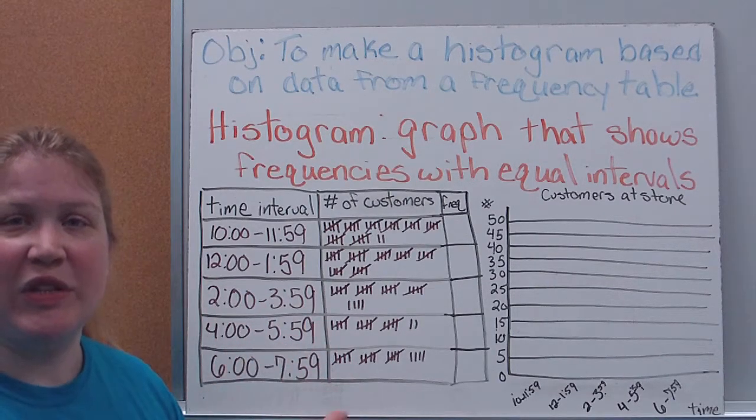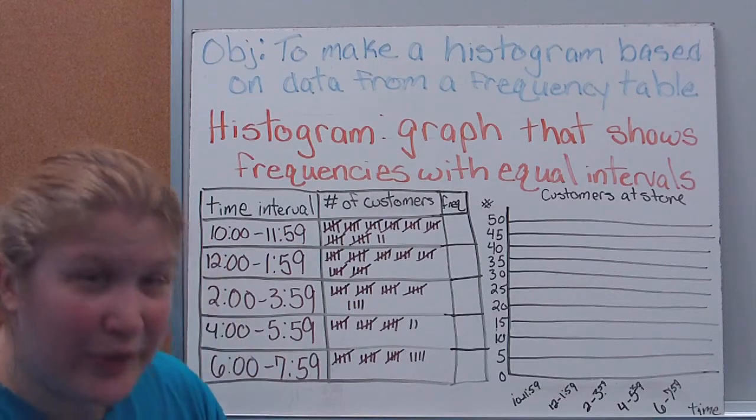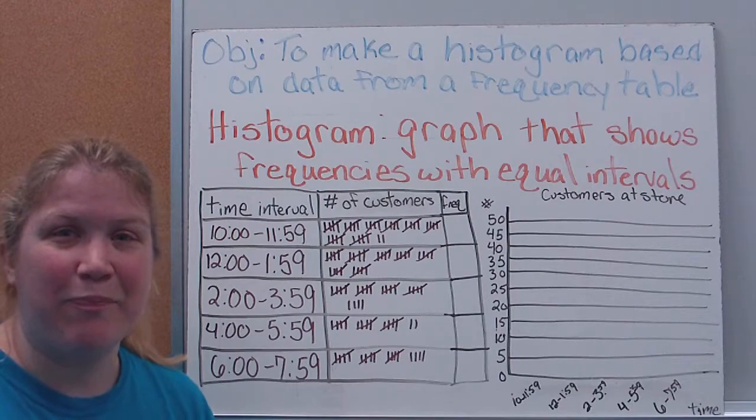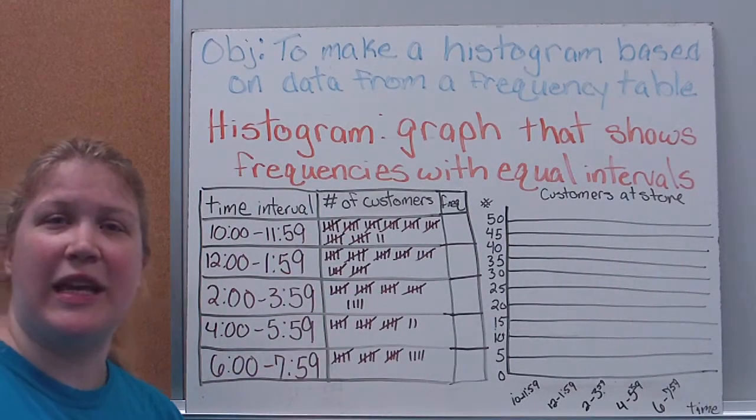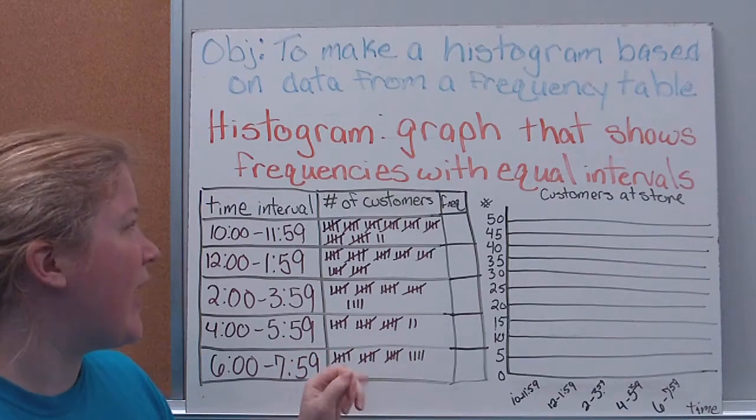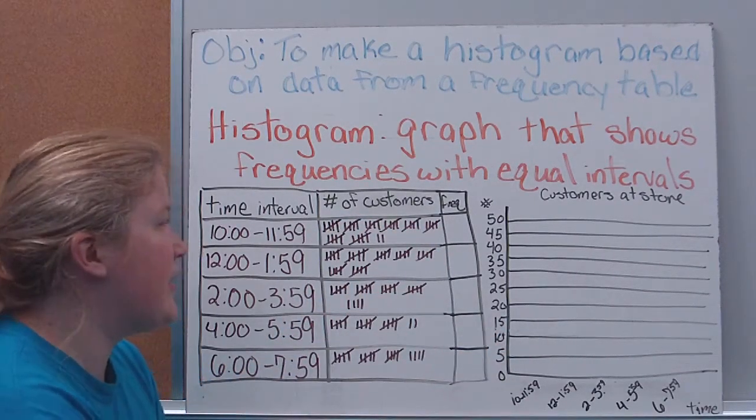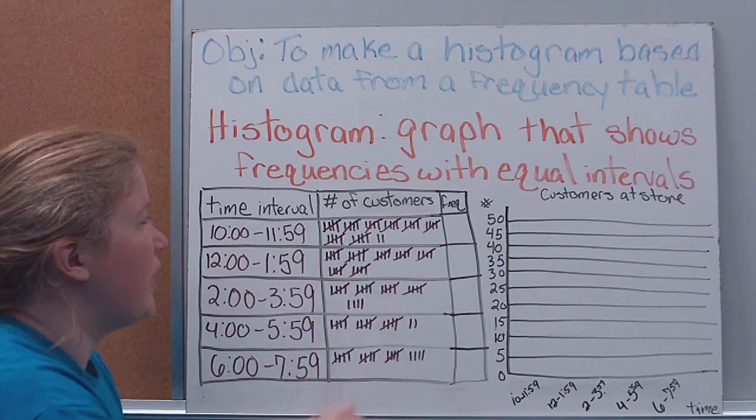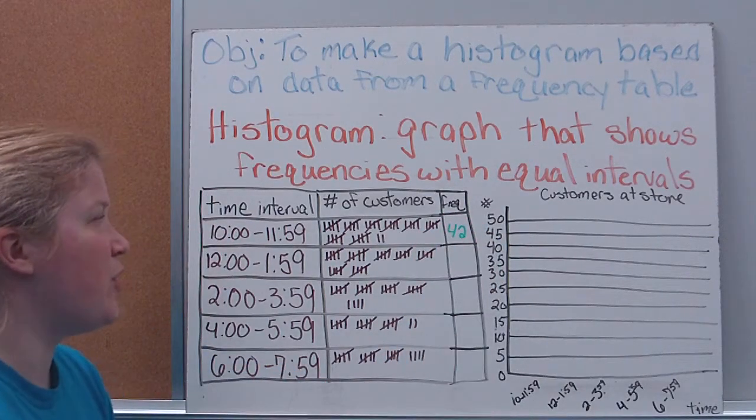This is a graph for the number of customers who came into a store during certain hours. So what we're going to do is we're just going to finish up our frequency table and then we're going to make it into a histogram. So the first thing you'll notice is I already have the tally marks. As they went through the day, you would tally it up. So we're just going to count tally marks, fill in our frequency so we can make our histograms. So I've got 42 customers in those first two hours.